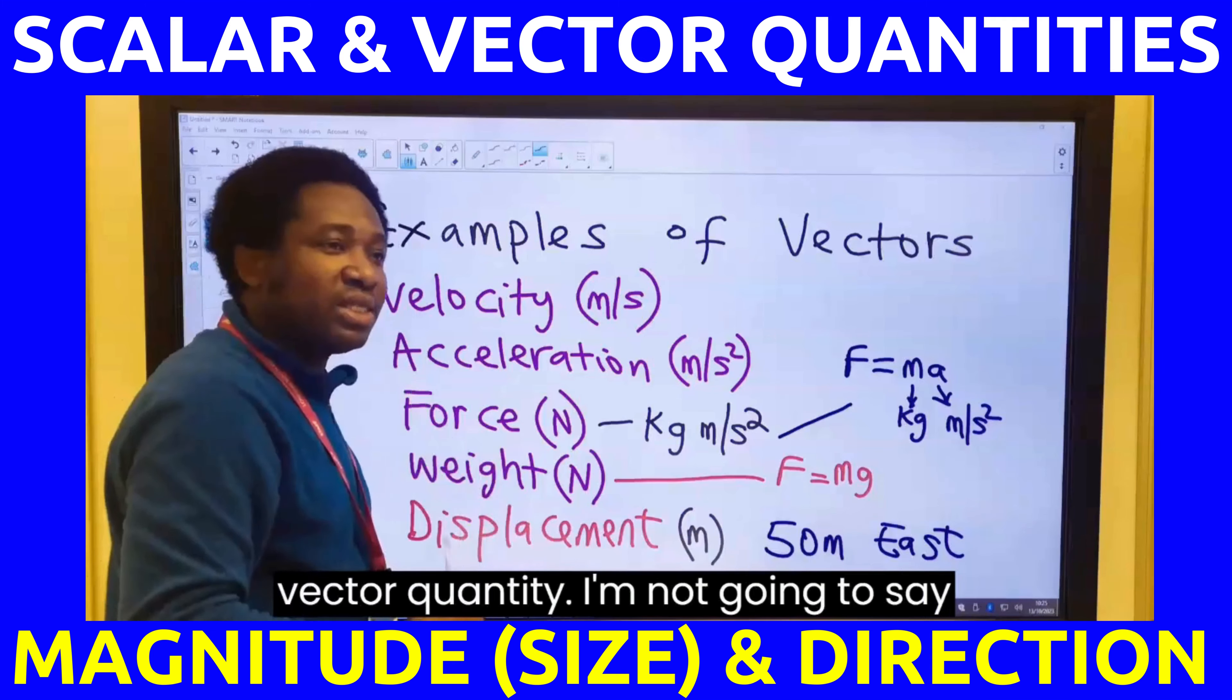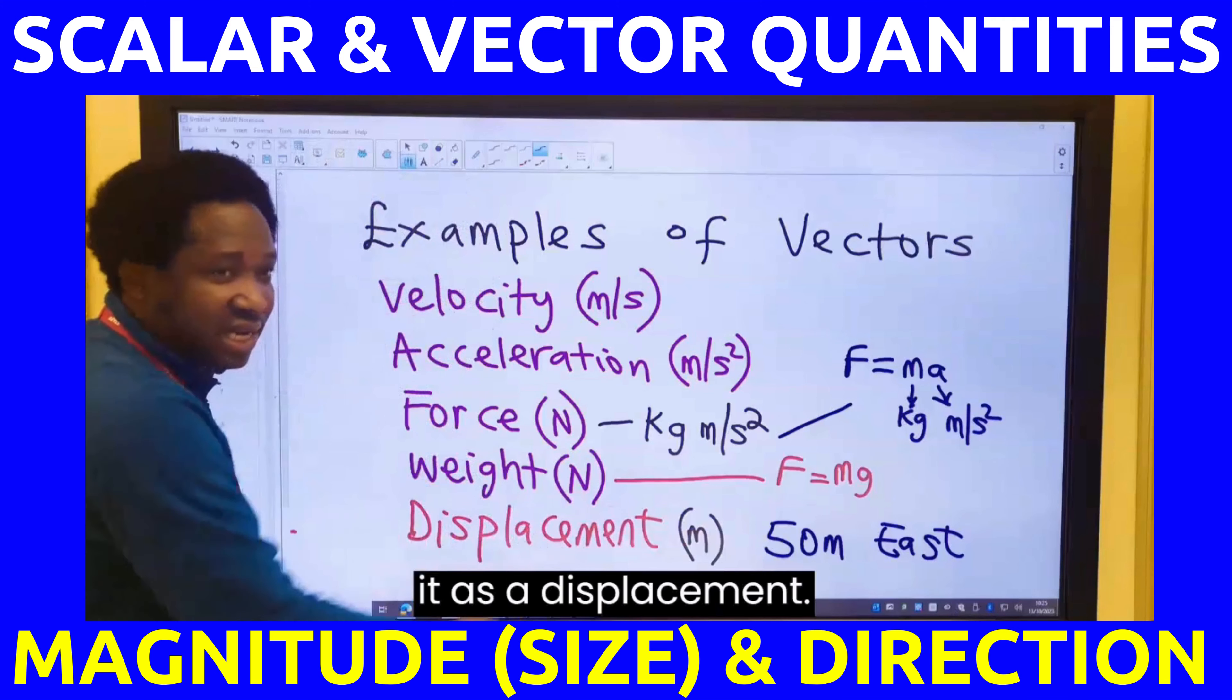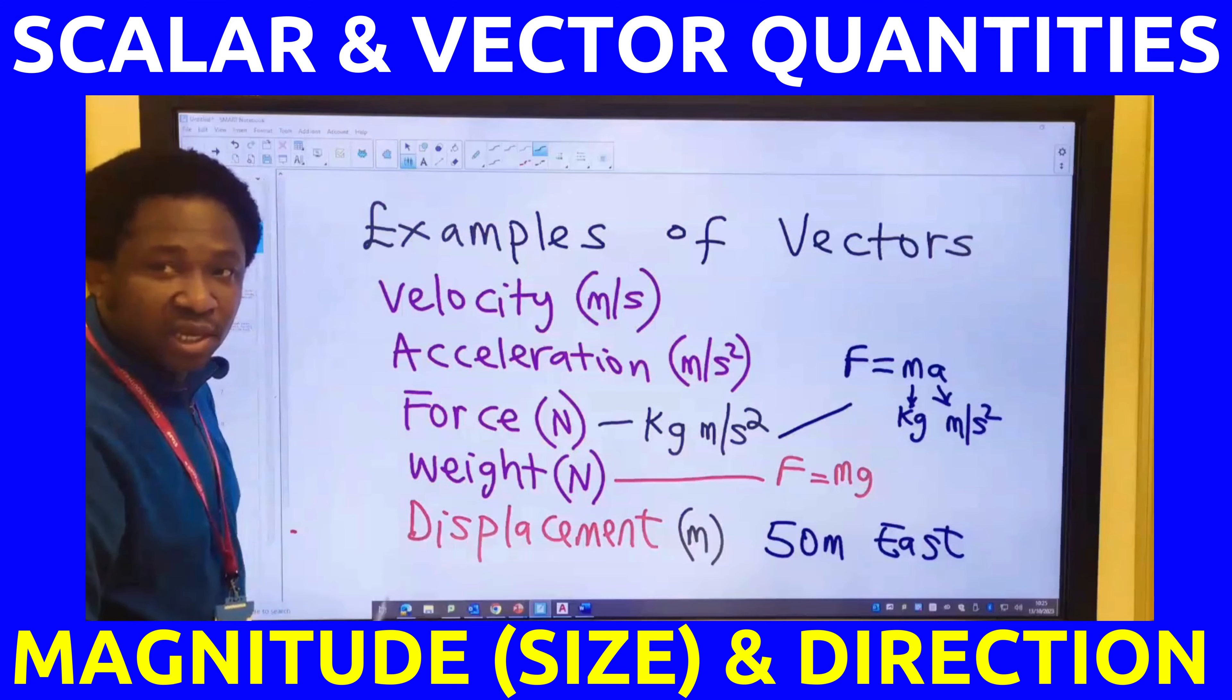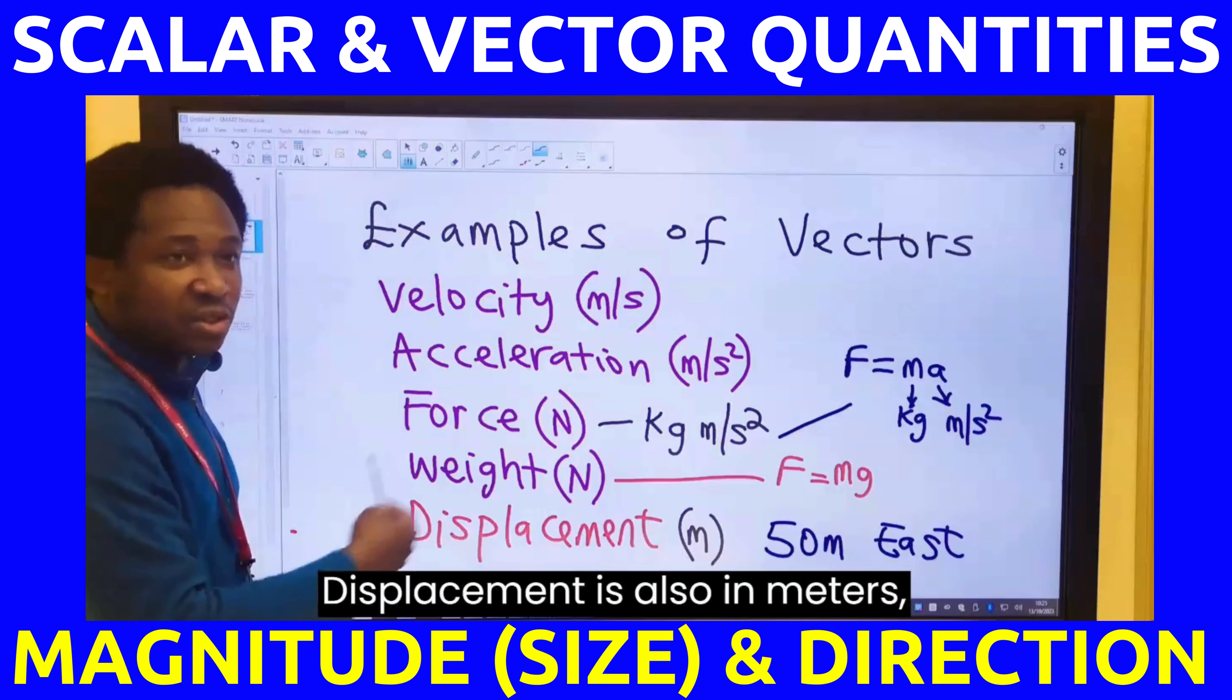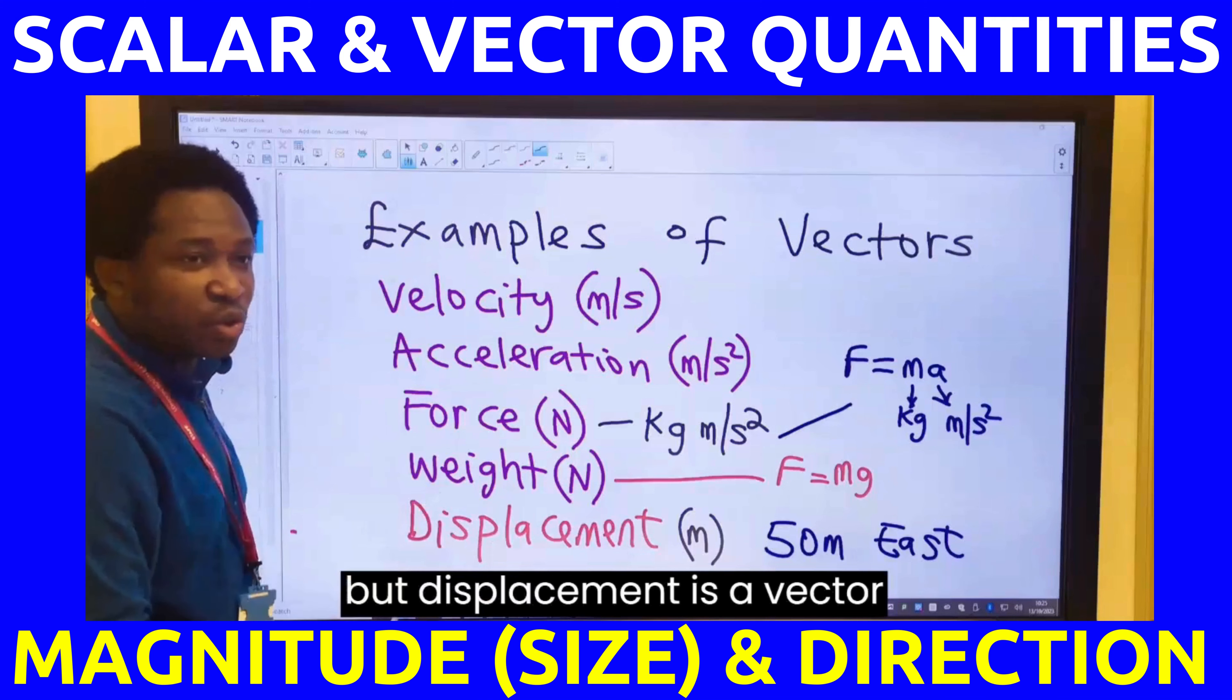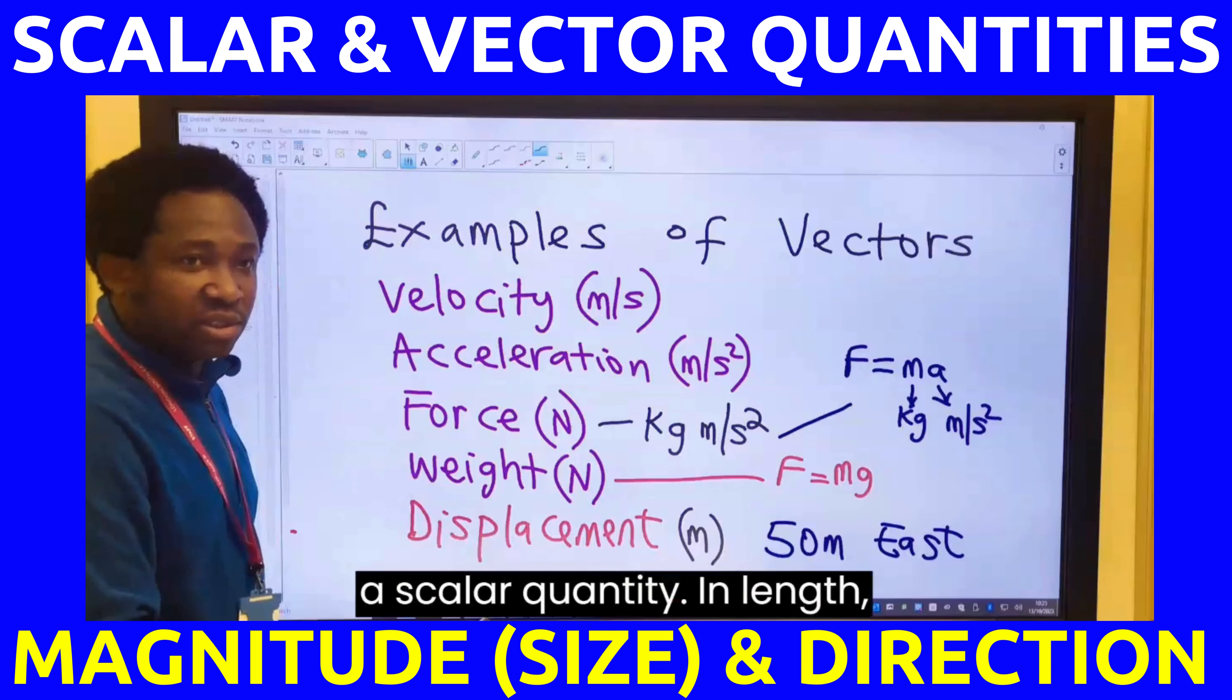I'm not going to say length anymore. I will consider it as a displacement. Displacement is a vector quantity. Length is a scalar quantity. Length is meters. Displacement is also meters. But displacement is a vector quantity, while length is a scalar quantity.